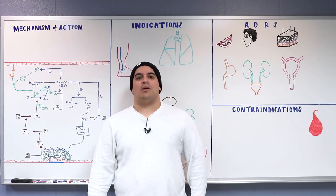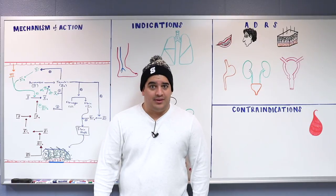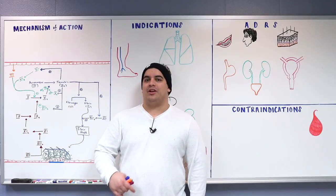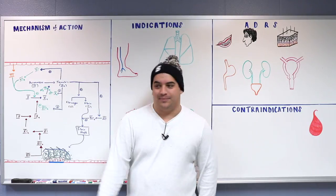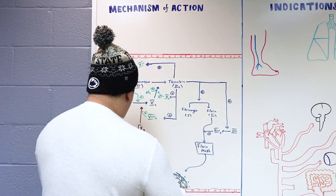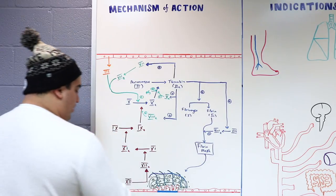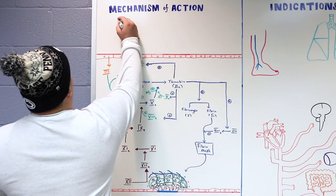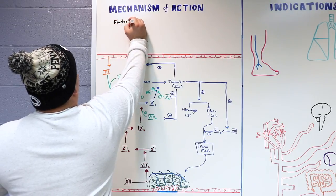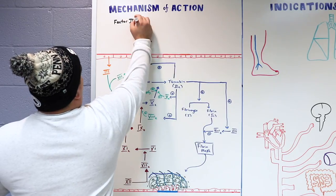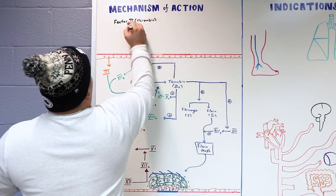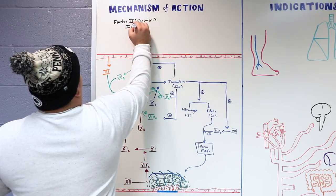In this video we're going to talk about direct factor inhibitors — factor 2 inhibitors, also known as thrombin inhibitors, and direct factor 10 inhibitors. These are two main groups of direct factor inhibitors. Factor 2 inhibitors directly inhibit thrombin.